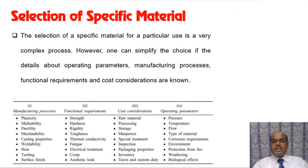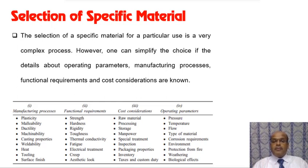The selection of a specific material for a particular use is a very complex process. However, one can simplify the choice if they know the details about operating parameters, manufacturing process, functional requirements, and cost.